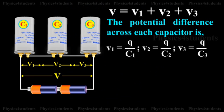The potential difference across each capacitor is V1 equals Q by C1, V2 equals Q by C2, V3 equals Q by C3.